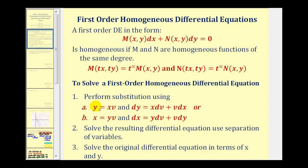The substitution is going to be either Y equals X times V, and therefore DY is equal to X DV plus V DX, or we can use X equals Y times V, and therefore DX is equal to Y DV plus V DY.